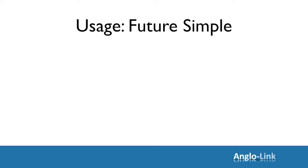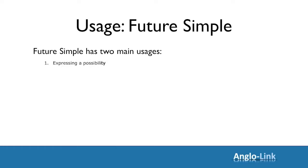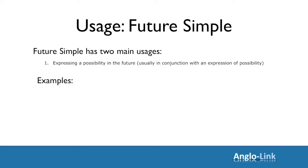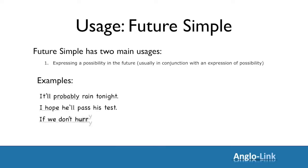Let's move on to usage now. Future simple has two main usages. The first one is to express a possibility in the future, and in this case we usually include an expression of possibility in our sentence — expressions such as I hope, I think, maybe, probably. For example: It'll probably rain tonight. I hope he'll pass his test. If we don't hurry, we'll miss our flight.